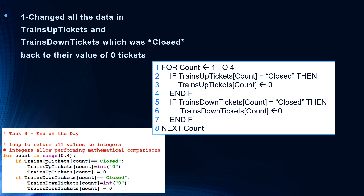Here's step one. At the bottom we can see it in Python code, and on the right these are the first eight lines of pseudocode. We have a for loop that checks all the trains. If trains up tickets of count is equal to closed, then assign trains up tickets of count to be zero. Same for trains down tickets — if trains down tickets of count is equal to closed, then trains down tickets of count is now equal to zero. End if, next count.